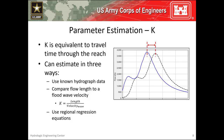When estimating an appropriate k, three approaches can be used. The first approach uses observed data at the start and end of the reach to directly compute the travel time. You can use the elapsed time between centroid of areas of the two hydrographs, between the hydrograph peaks, or between midpoints of the rising limbs. However, it's usually rare that observed data is available at both the upstream and downstream end of the reach, so this approach isn't too common. The second approach to estimate k uses a computed flood wave velocity and flow length to infer a travel time, and this approach is more commonly used.